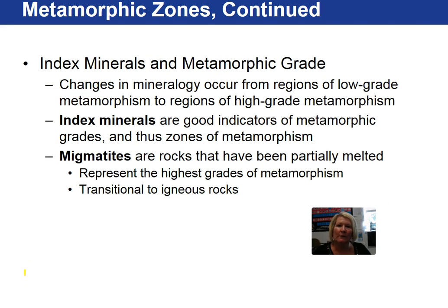One of the changes during metamorphism from low to high grade is changes in mineralogy. We use index minerals, which are indicators of the grade of metamorphism. Migmatites are part igneous and part metamorphic. They represent the highest grade of metamorphism and are transitional to igneous — actually part igneous. This is an example of a rock that cannot be placed in any one particular rock group; it is both igneous and metamorphic.